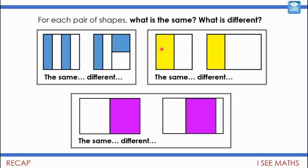Now here, we've got the same part that's yellow — this part and this part are the same. It's just that what's different is the whole is bigger. So actually that means the fraction that is yellow is larger on this shape because the part is smaller. Whereas this time the fraction that's yellow is smaller because the whole is larger.